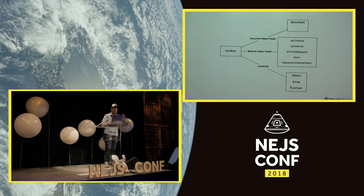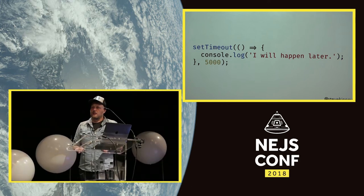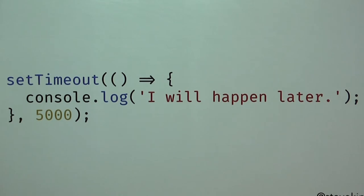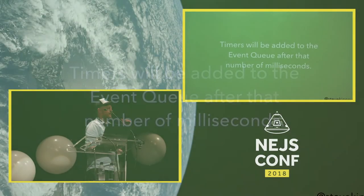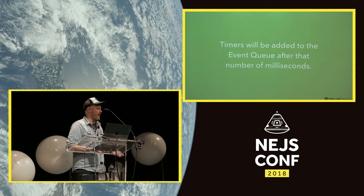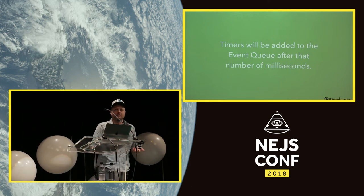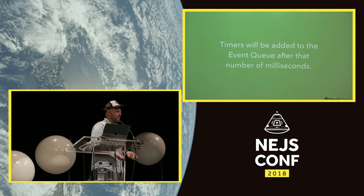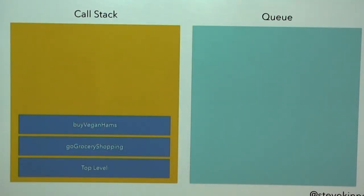One example of an asynchronous call is setTimeout, everyone's friend — it takes a function to call and an amount of time to wait. A common mistake is thinking it will execute in 500 milliseconds. That's not true — it will be added to the event queue in 500 milliseconds, and if there's stuff on the call stack it'll sit and wait. It's at least 500 milliseconds. That's why for smooth animations, requestAnimationFrame is a better bet.